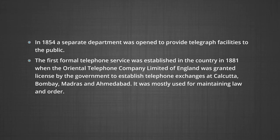In 1854, a separate department was opened to provide telegraph facilities to the public. The first formal telephone service was established in the country in 1881, when the Oriental Telephone Company Limited of England was granted a license by the government to establish telephone exchanges at Calcutta, Bombay, Madras, and Ahmedabad. Even though the electric telegraph service was an important development, it was mostly used for maintaining law and order. In fact, both the telegraph and postal services, despite serving a useful public purpose, remained inadequate throughout.